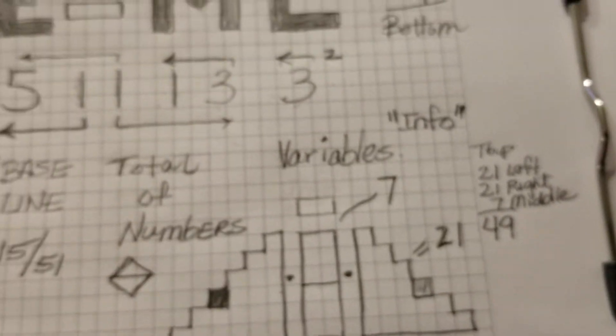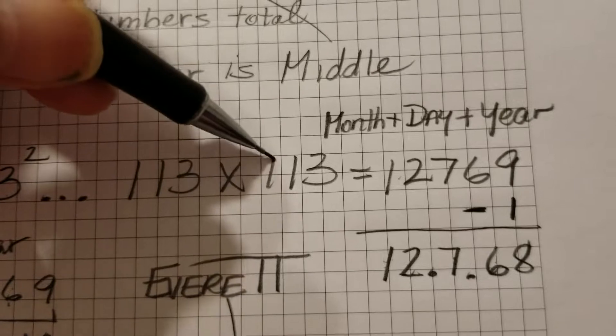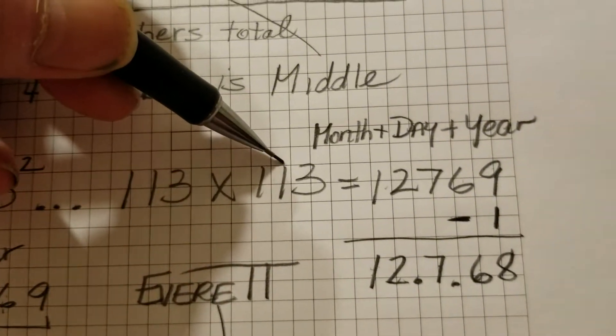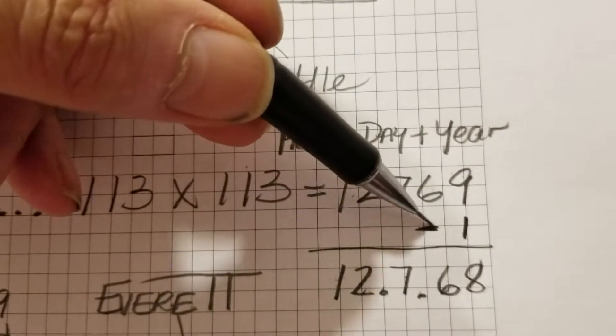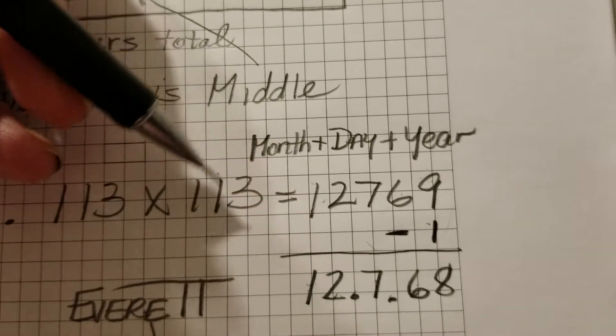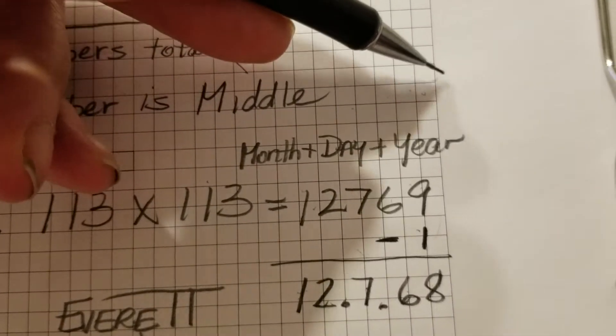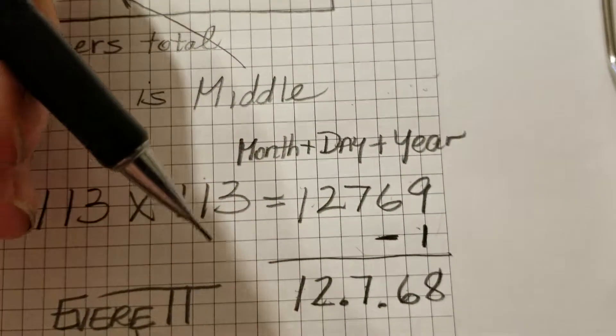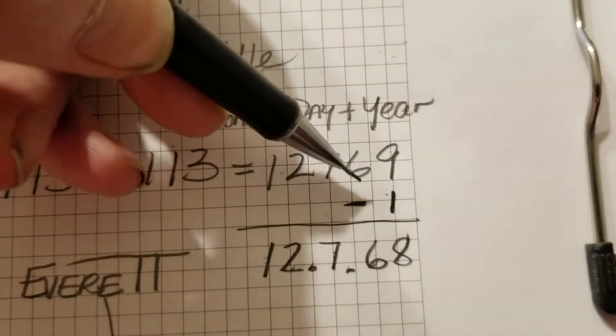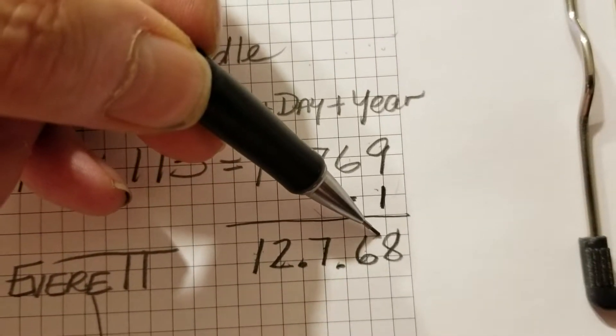We took 113 squared, which is 113 times 113, and that's 12769. We minus 1. This is a variable, and we see that also in our date where every fourth year, because it's 365 days plus a quarter, that's why every four years we add a date to try to stay accurate. We're going to minus 1, and that's how we come with 12768.